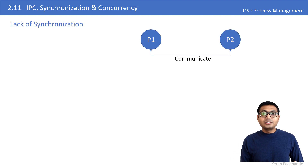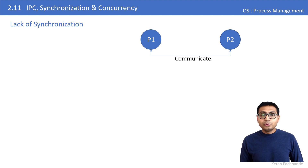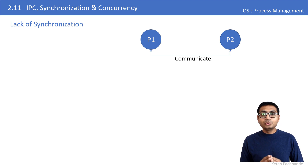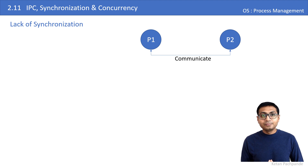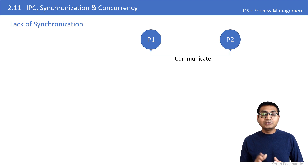When two or more processes communicate with each other, they have to be in synchronization. For example, when you talk over the phone with a friend, you make sure that only one person talks at a time. Even in a group video call with many people, only one person talks at a time — that's how they understand each other and stay in sync.